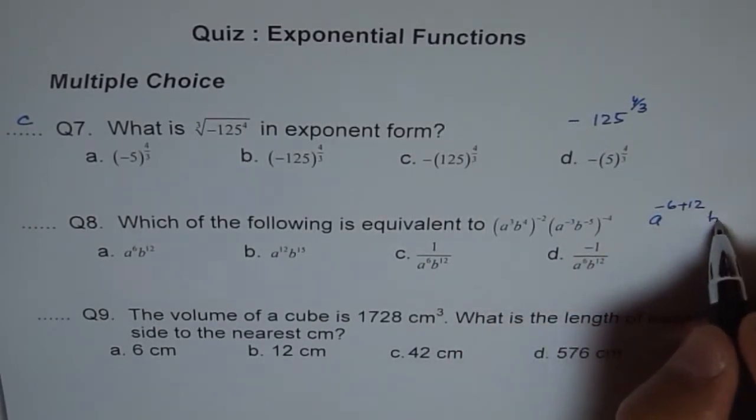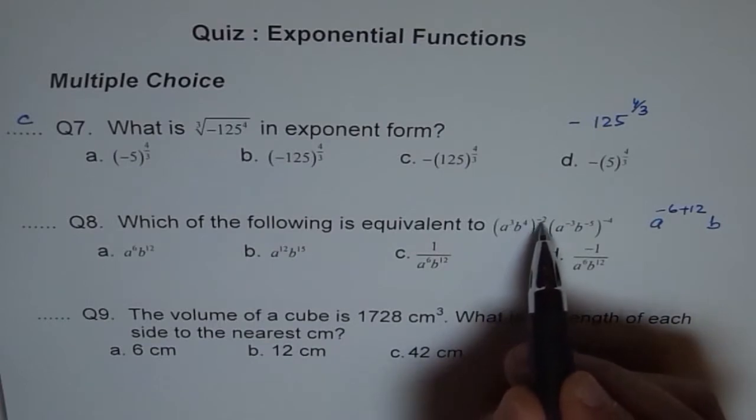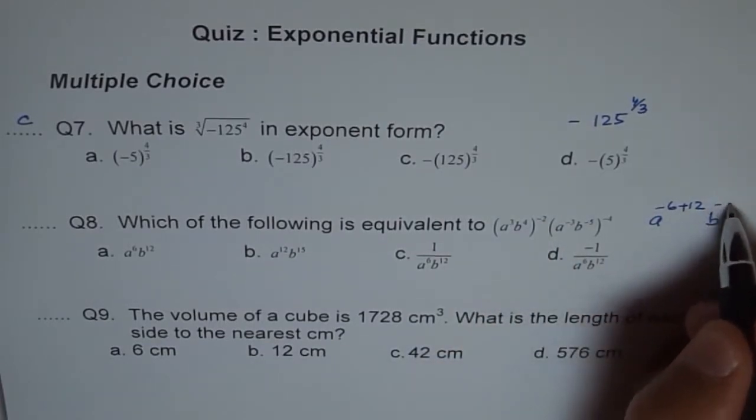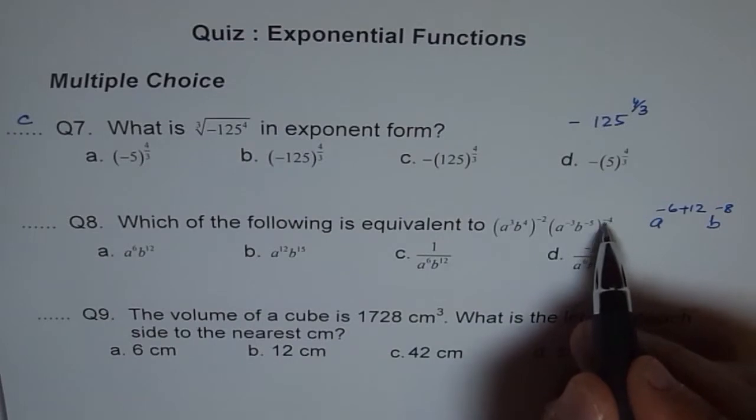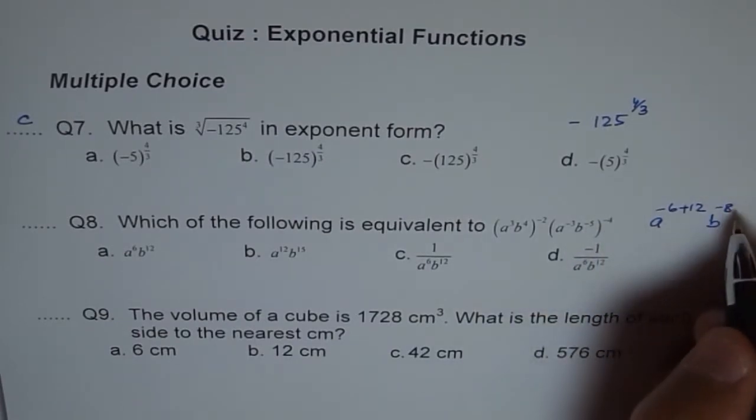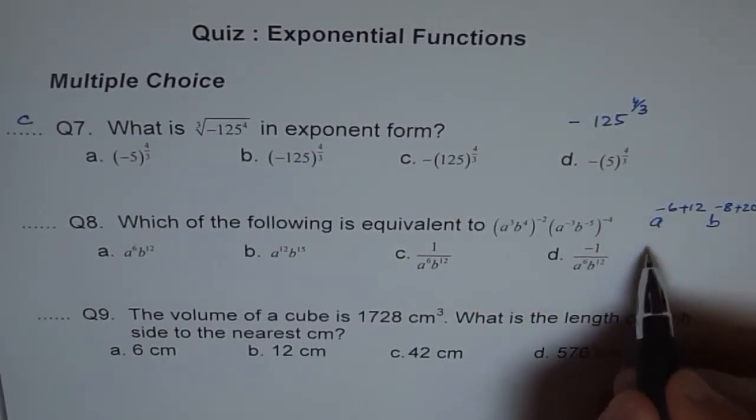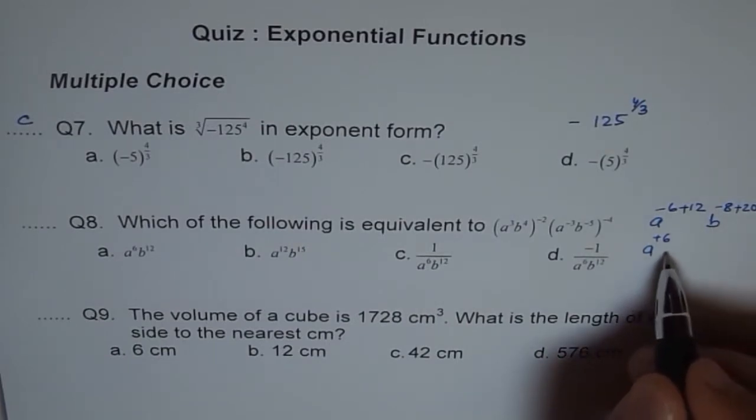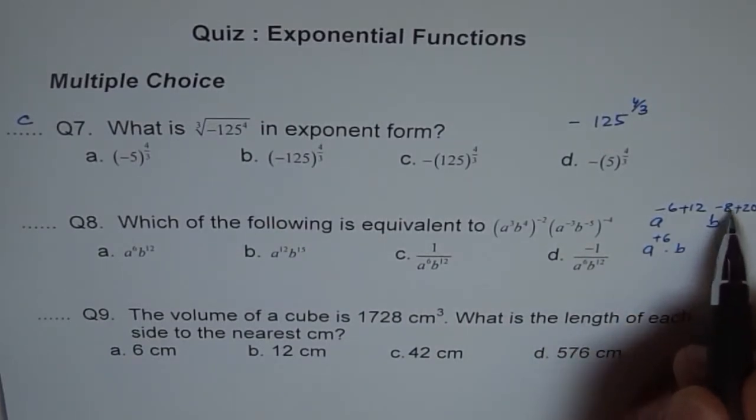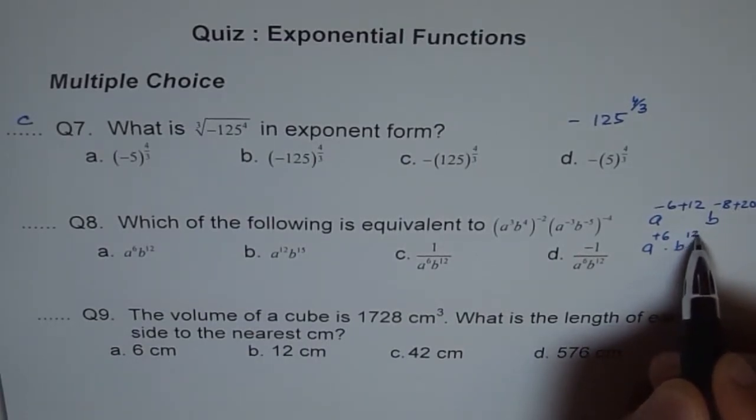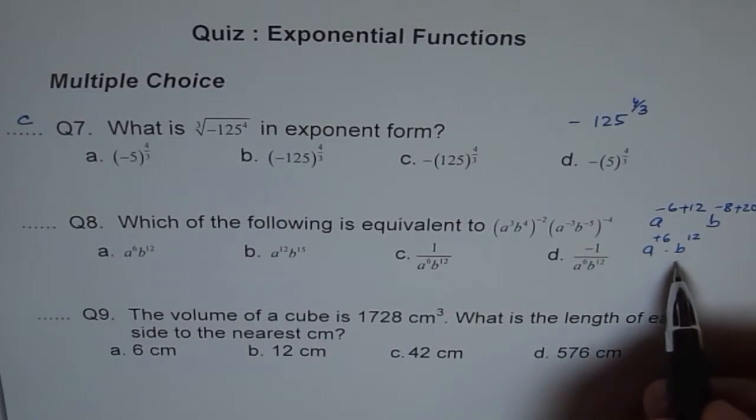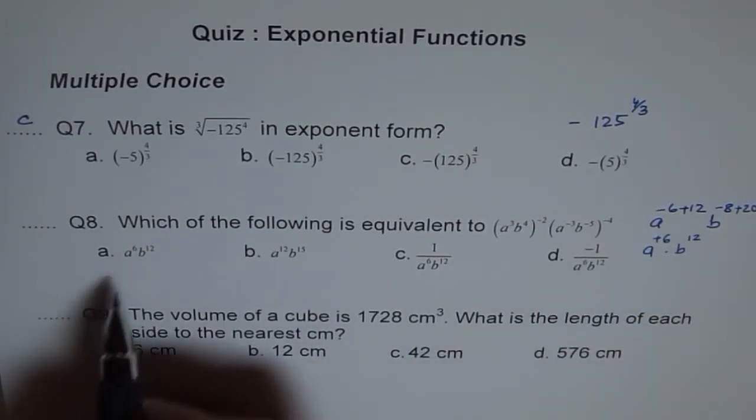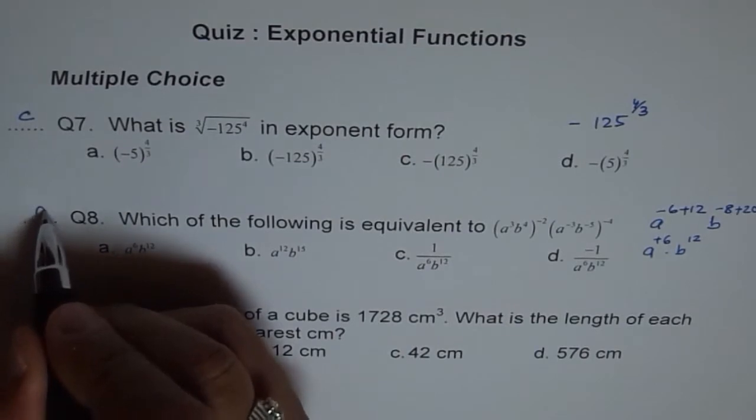How about b? Now let me write b's. b 4 times minus 2 is minus 8. And here b is minus 5 times minus 4 which is plus 20. So therefore we get a to the power of minus 6 plus 12 is 6, and b to the power of plus 20 minus 8 which is plus 12. So we got this answer. a to the power of 6 and b to the power of 12 which is our option a. So we will write a here.